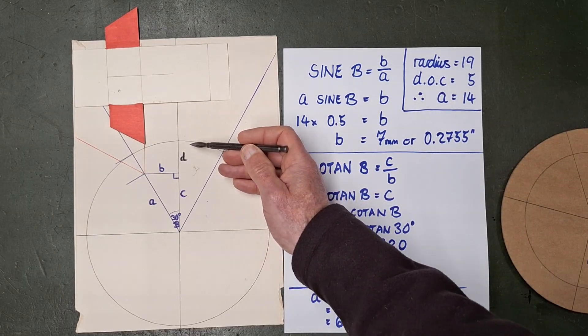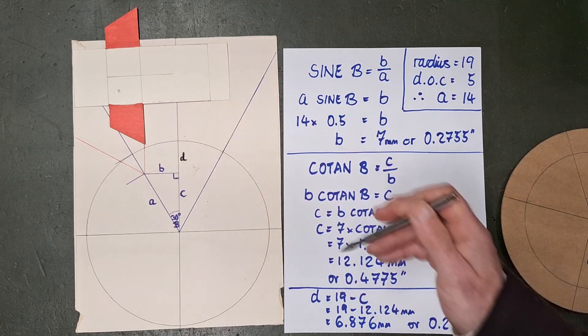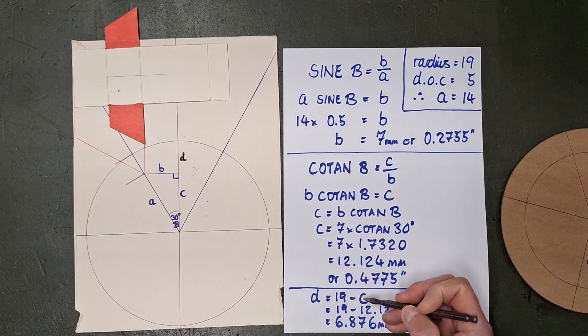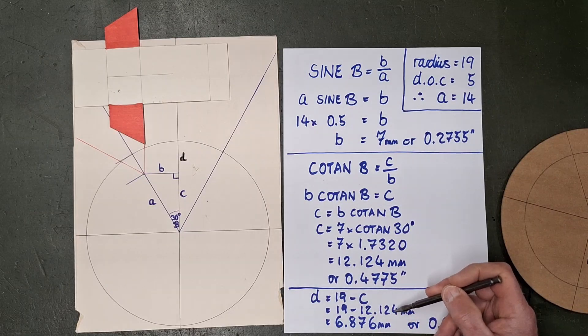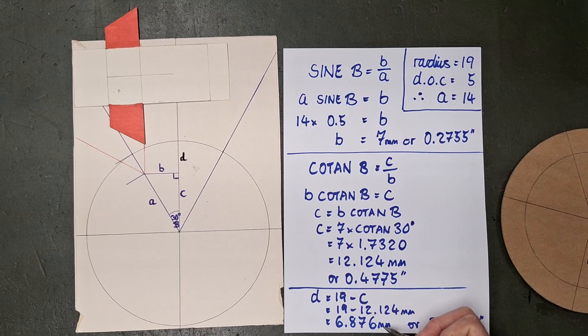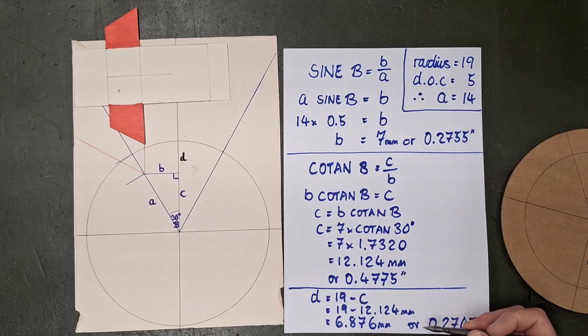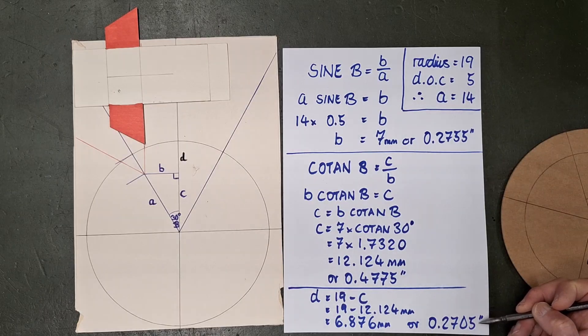So we now know what C is. Well, we already know that this total dimension is 19. So to arrive at D, all we have to do is subtract C from 19. So C was 12.124, knock that off of 19, and you get 6.876 millimeters. Again, divide by 25.4 and you get 0.2705 inches.